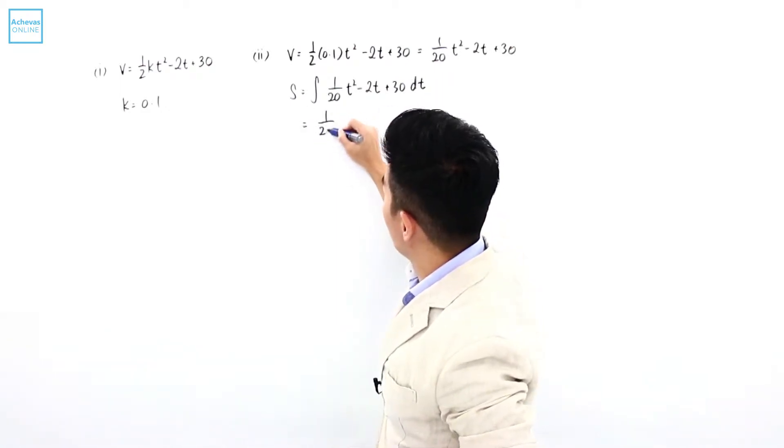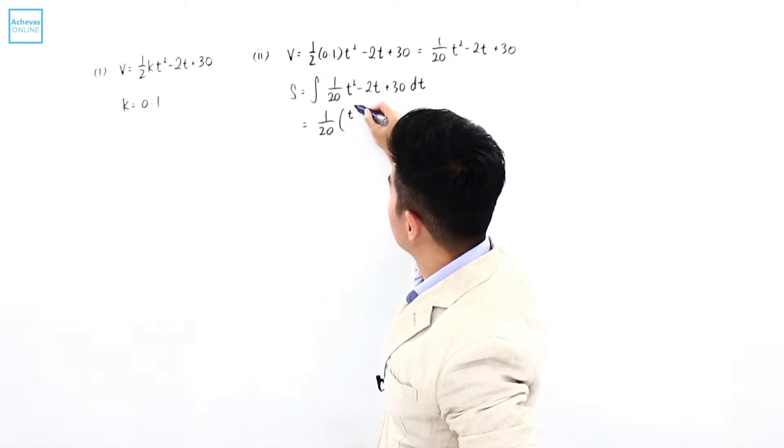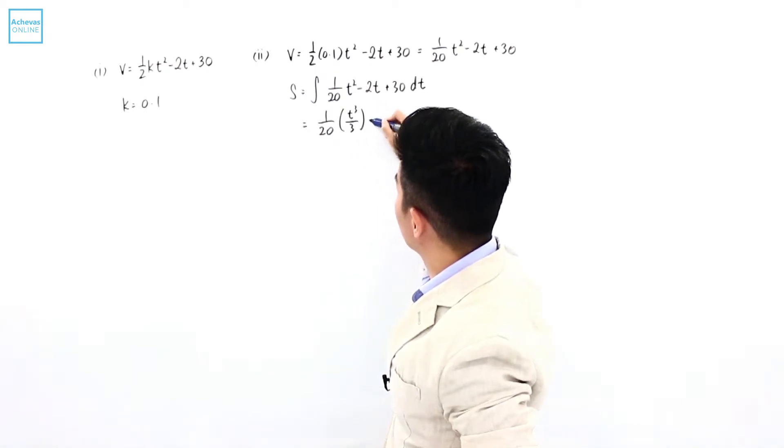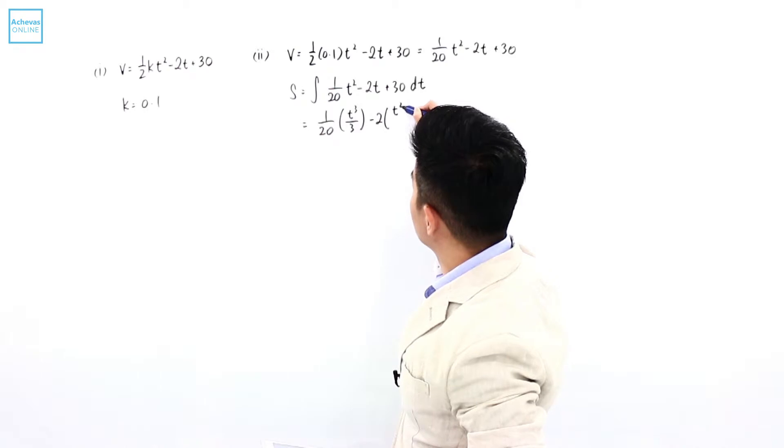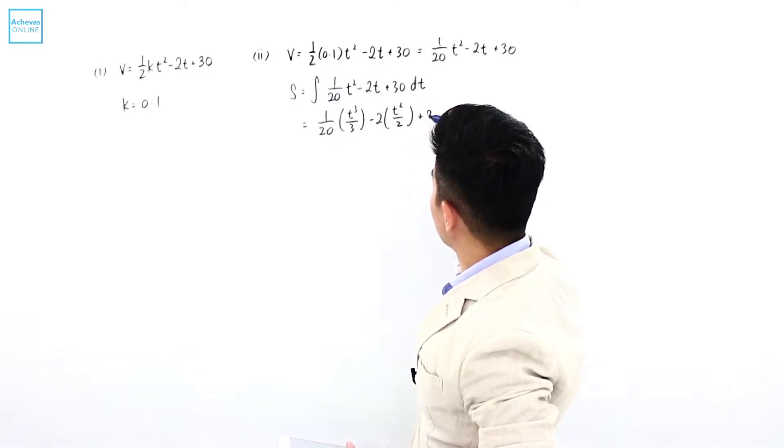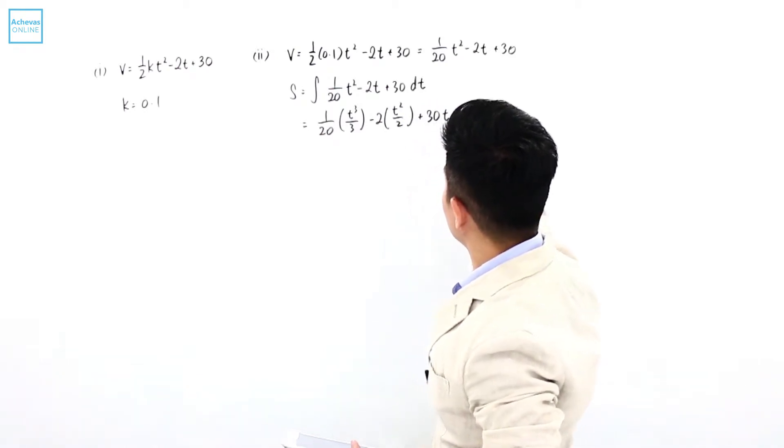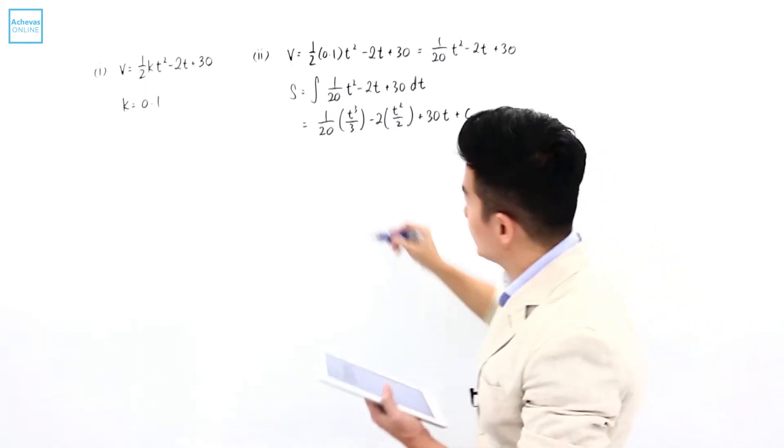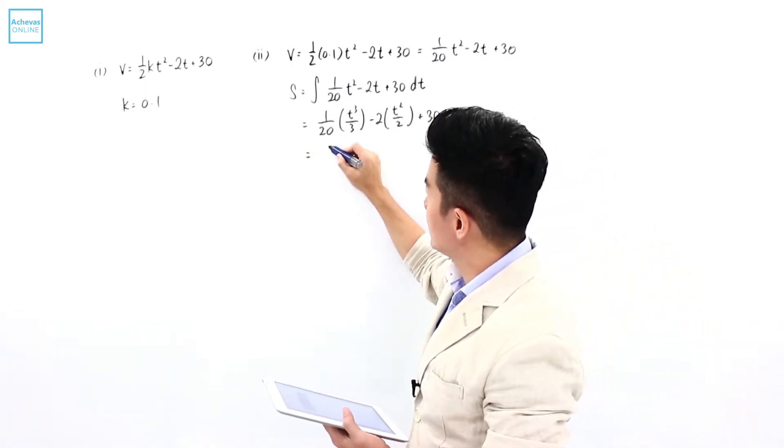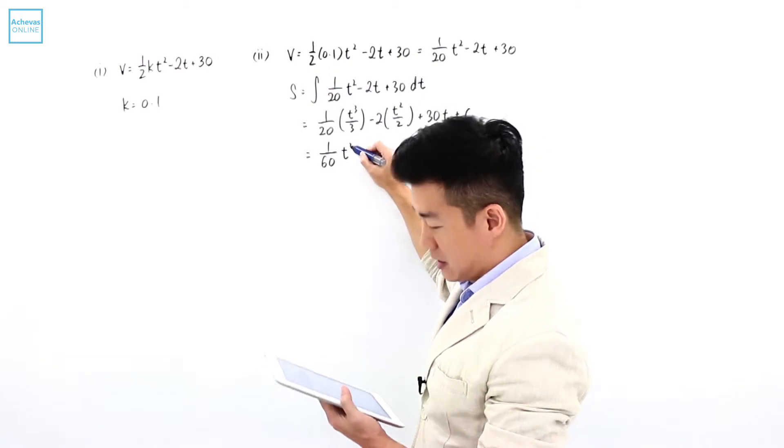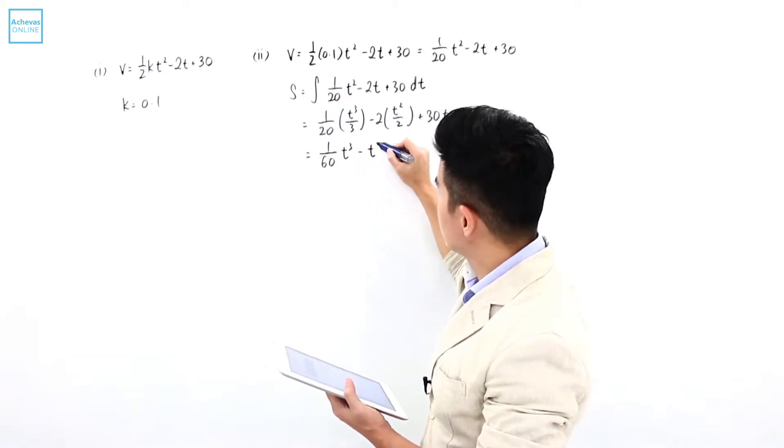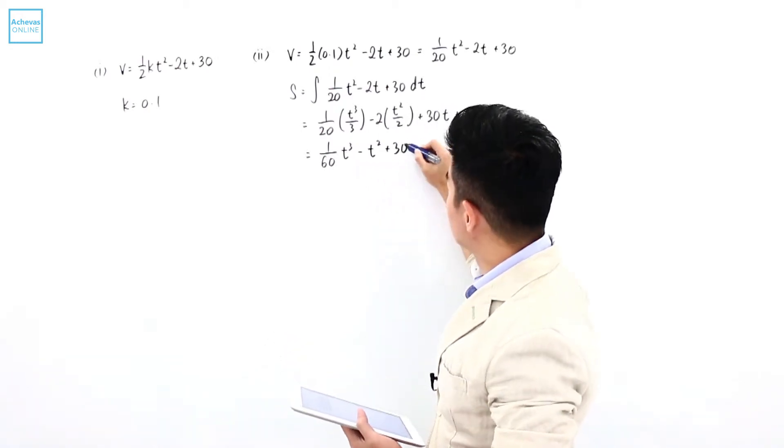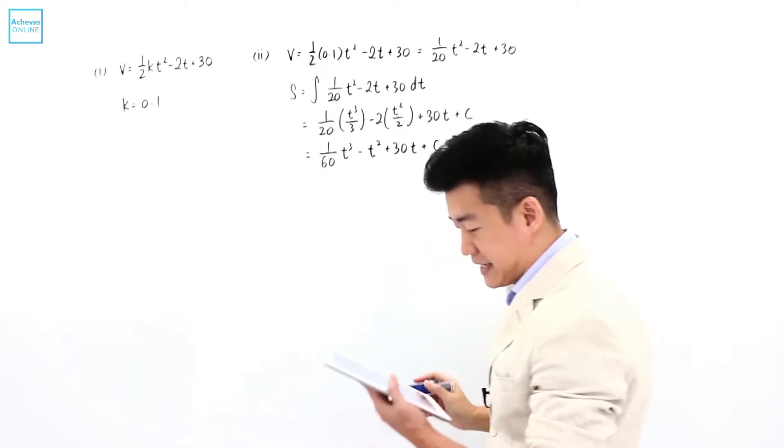It is 1 over 20 of t to the power of 3 over 3 minus 2 t squared over 2 plus 30t plus c. So the displacement is going to be 1 over 60 t to the power of 3 minus t squared plus 30t plus c.